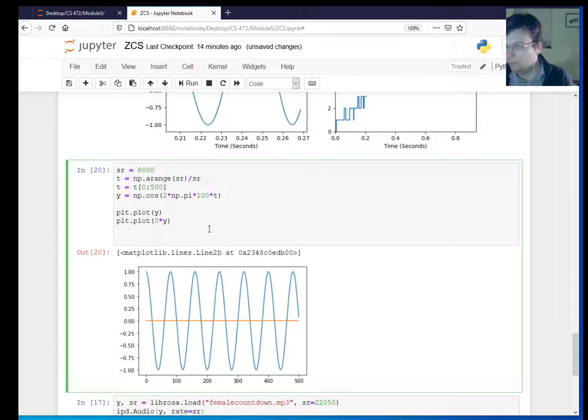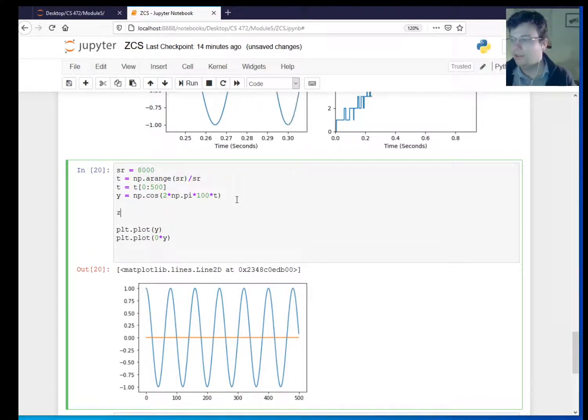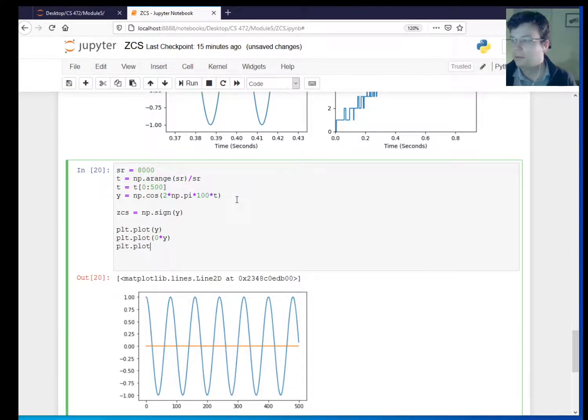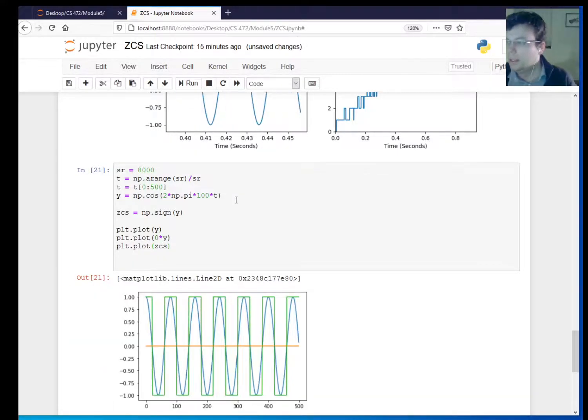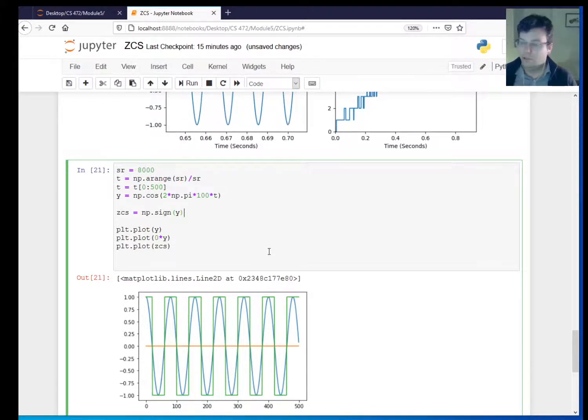So that's what we're going to do. First, let me just generate this thing that peaks every time there's a zero crossing. So let me say t is equal to np.arange. I'll say sr equals 8000, t equals np.arange(sr) / sr. So y equals np.cos(2 * np.pi * t). I'll make a pretty low frequency. So I'm just going to do a regular sine wave for now.